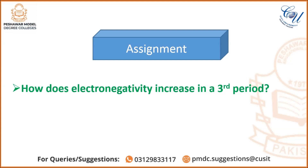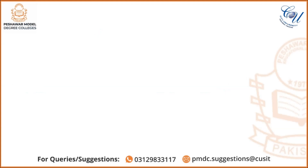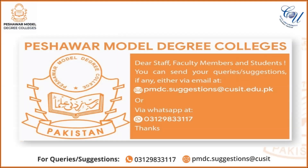The last part of the outline is the assignment. Students, your assignment is: how does electronegativity increase in the third period? Explain it. Thanks.